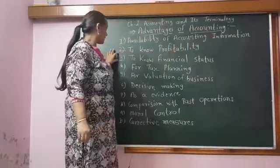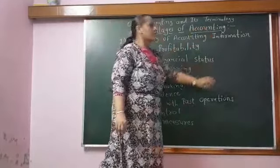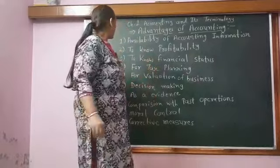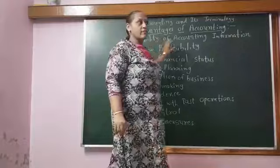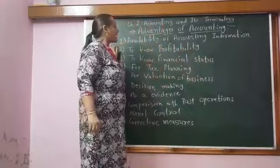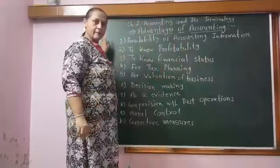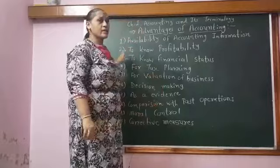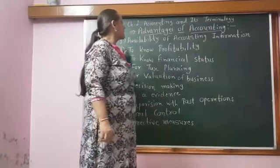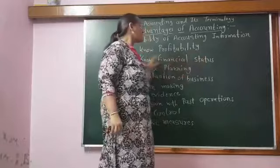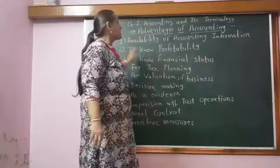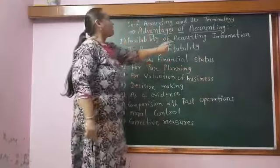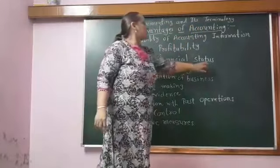The third advantage is to know the financial status. In business, when we are preparing final accounts, we prepare three accounts: trading account, profit and loss account, and balance sheet. From the balance sheet, we can come to know how much liability we are supposed to pay. Liability means the money we are supposed to pay to the other party. If the business has more liability, the financial status is weak. If liability is less, then the financial status is strong. So from accounting, we can know the financial status of the business.